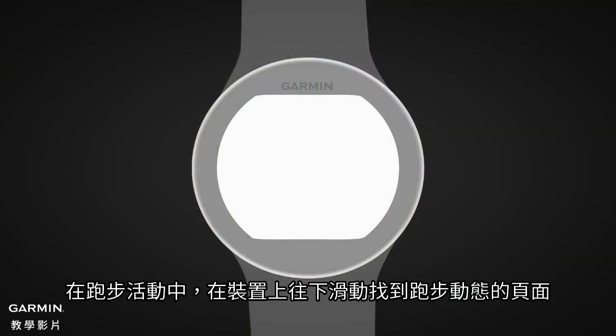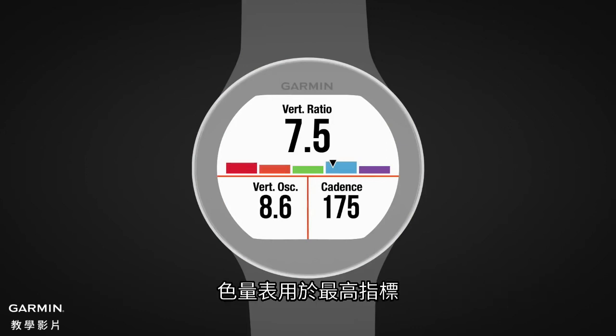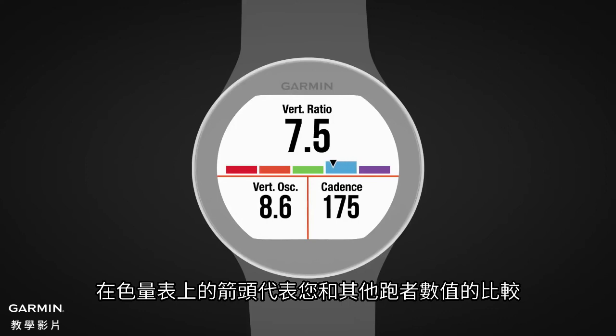During your running activity, scroll down until you see either of the running dynamics screens. The color gauge applies to the top metric. The position of the pointer on the gauge indicates how your value compares to other runners.